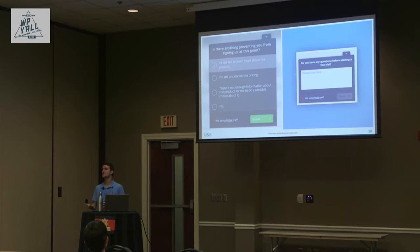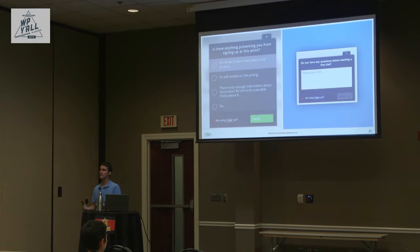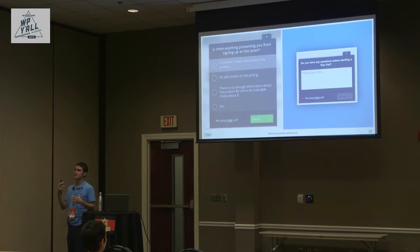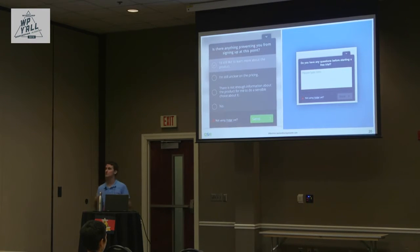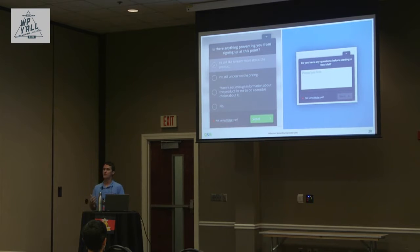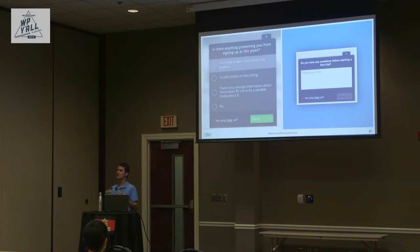One example asks 'Is there anything preventing you from signing up at this point?' as a quick closed-answer question. Another asks 'Do you have any questions before starting a free trial?' as an open-answer. The closed version is fast if you already know the likely issues. The open-answer version is more useful if you're not sure what the problems are. Usually, you'd start with open-answer and move to closed-answer once you understand the patterns.